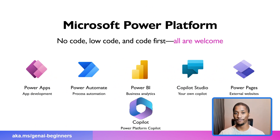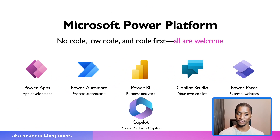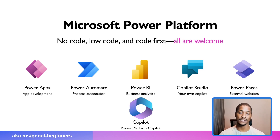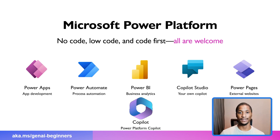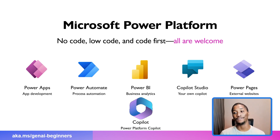The Power Platform is made up of five products: Power Apps for mobile app development, Power Automate for process automation, Power BI for business analytics, Copilot Studio — my personal favorite — where you can build your own Copilot, and Power Pages where you can build externally-facing websites. All of these have a Generative AI capability enabled through Copilot, which lets you build even faster solutions using each product within the Microsoft Power Platform.